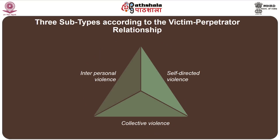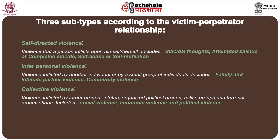There are three subtypes according to the victim-perpetrator relationship. The first is self-directed violence — violence that a person inflicts upon himself or herself. This includes suicide thoughts, attempted suicide, completed suicide, self-abuse, or self-mutilation. If committed by either sex it is called gender violence; if by a male, it is male violence; if by a female, it is female violence.